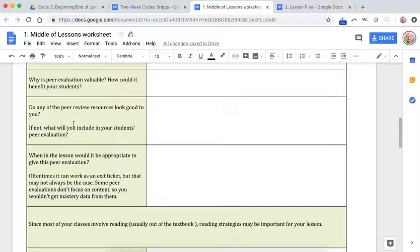That peer evaluation should obviously come after the group work. It could be your exit ticket or your mastery check. But if you notice from the peer evaluation resources that I shared, they don't have content questions. So you wouldn't really get mastery data.